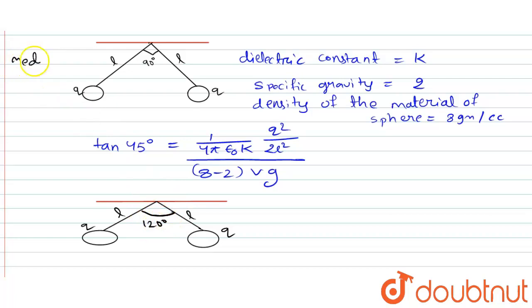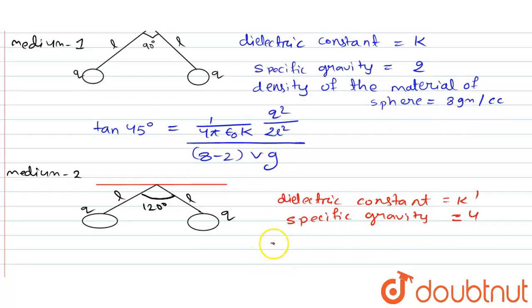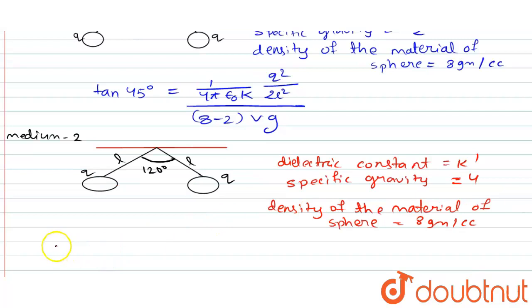This is for medium 1 and this is for medium 2. For the medium 2, dielectric constant is equal to K', specific gravity is 4...density of the material of sphere is 8 gram per cc.